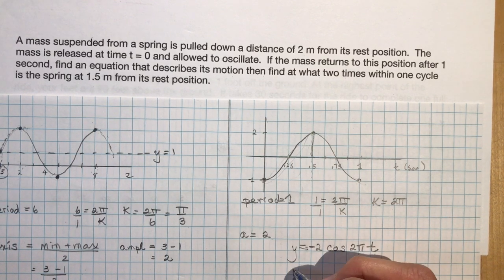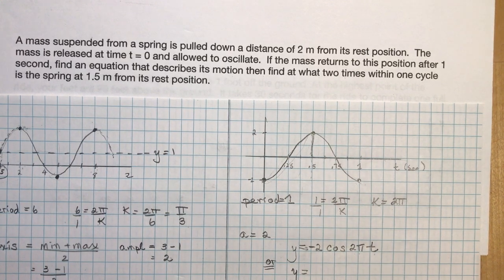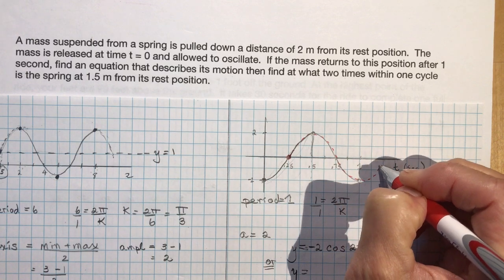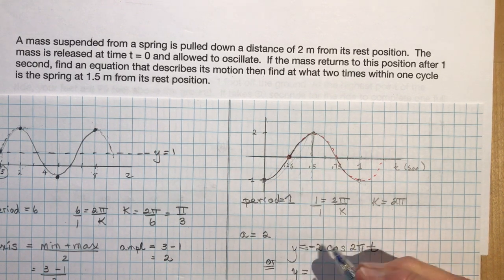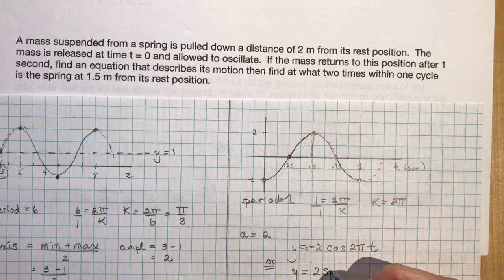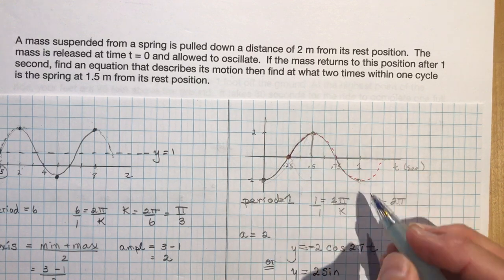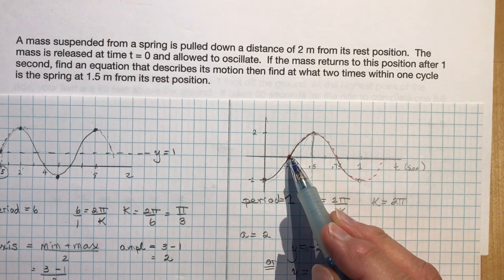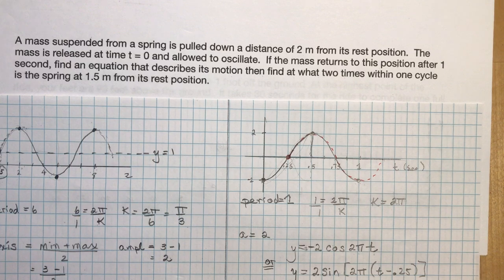If you want a sine function instead, the sine function starts on the axis going up, which occurs at t equals 0.25 seconds. So y equals 2 sin[2π(t − 0.25)]. The amplitude stays 2 and the period stays 2π — only the horizontal shift changes to minus 0.25 because we're starting a quarter period to the right.